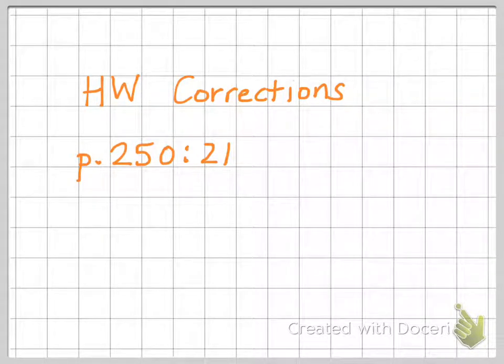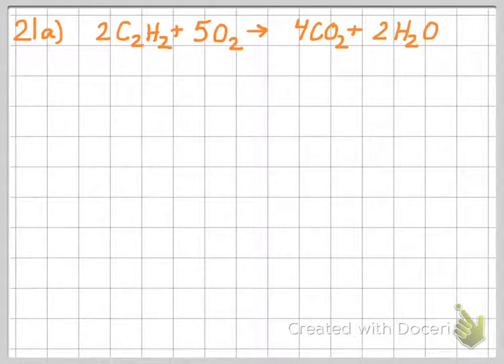Here are homework corrections for page 250 exercise number 21. Problem 21 says the combustion of acetylene gas is represented by this equation. Letter A asks how many grams of carbon dioxide and grams of water are produced when 52 grams of acetylene burns?